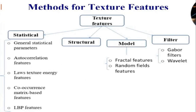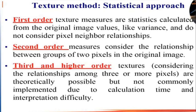There are different approaches used in image processing to describe the texture of a region: statistical approach, structural model, and filters. Here we discuss the statistical approach. First order texture measures are statistics calculated from the original image values like variance and do not consider pixel neighbor relationships. Second order measures consider the relationship between groups of two pixels in the original image. Third and higher order textures are theoretically possible but not commonly implemented due to calculation time and interpretation difficulty.